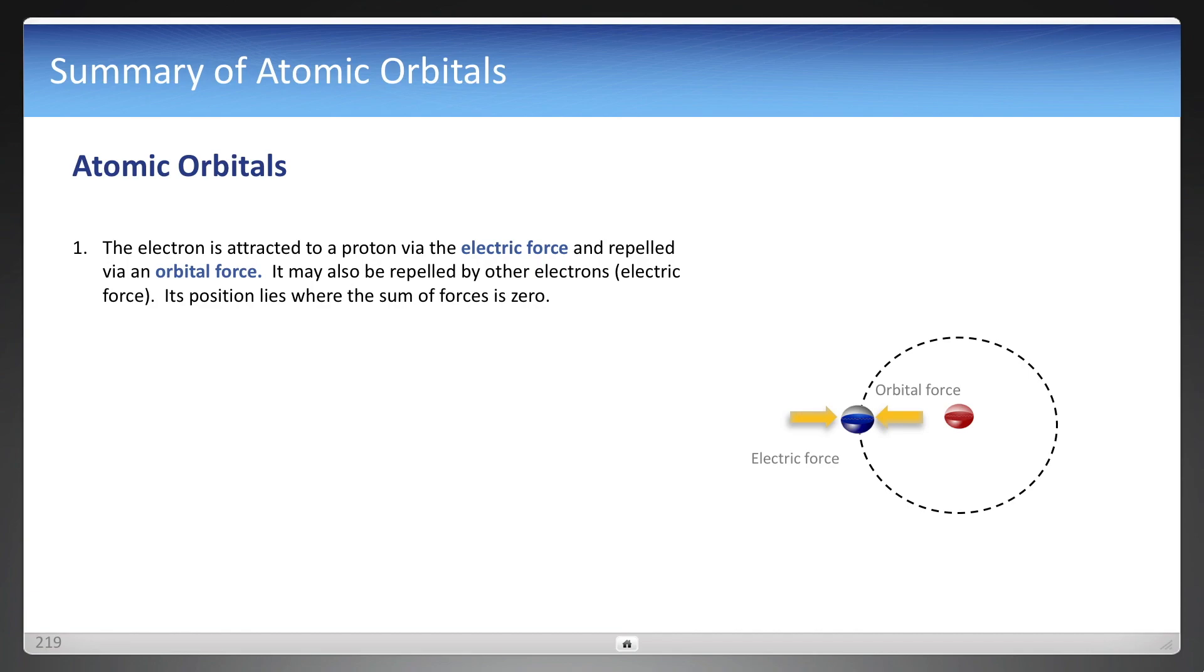And so to summarize this section on orbitals, the electron is attracted to the proton via electric force, but also repelled via an orbital force. And it may also be repelled by other electrons, but that's just the electric force. And when you calculate all of that with classical equations, you can determine where the electron lies based on where the sum of the forces is zero.